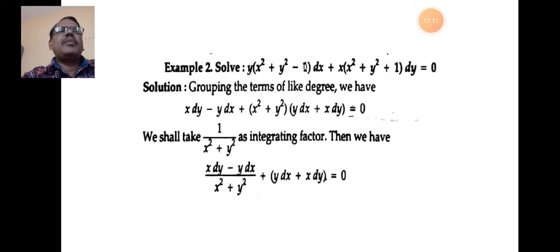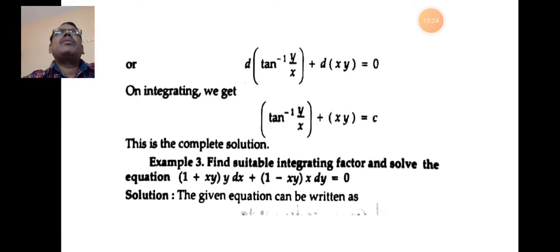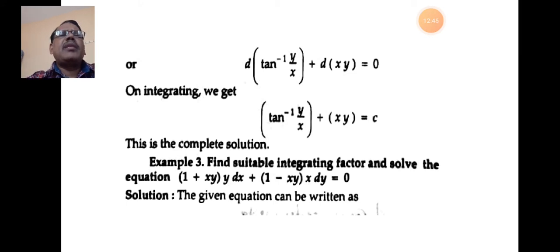After grouping, the first term becomes d(tan⁻¹(y/x)) and the second becomes d(xy) = 0. On integrating, tan⁻¹(y/x) + xy = c. This is the complete solution of the given differential equation.